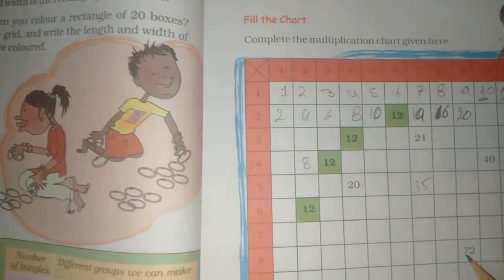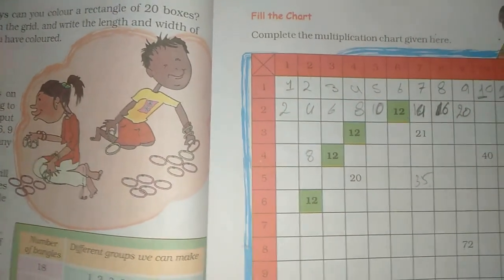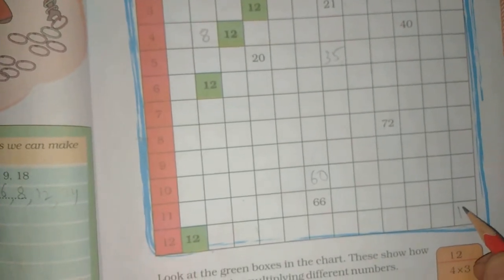8×9=72. 10×6=60. 12×12=144. Fill in the chart.